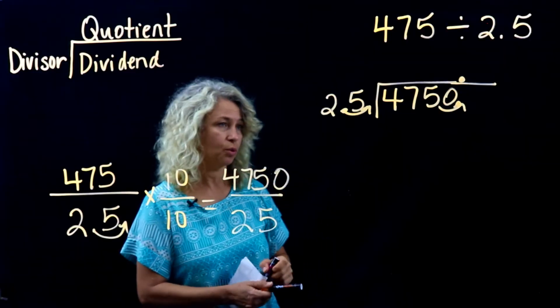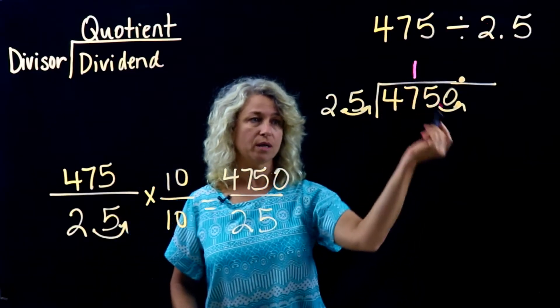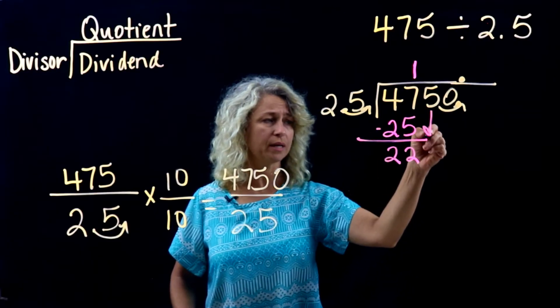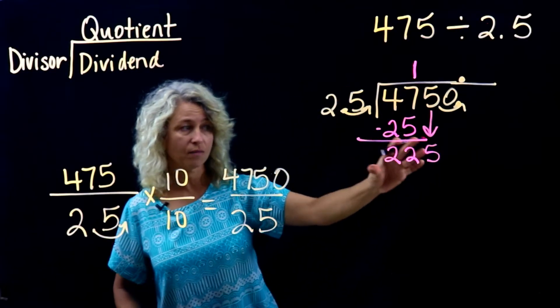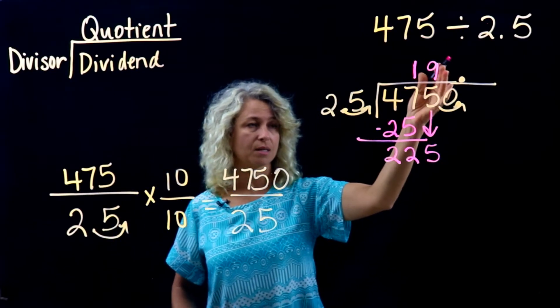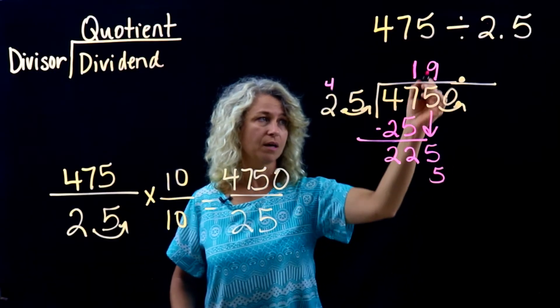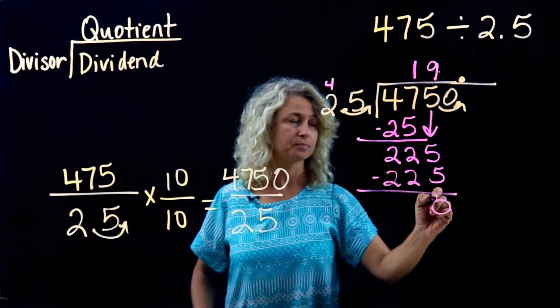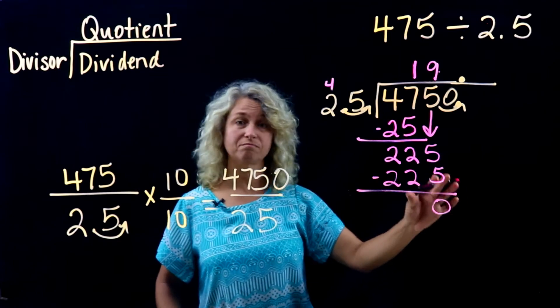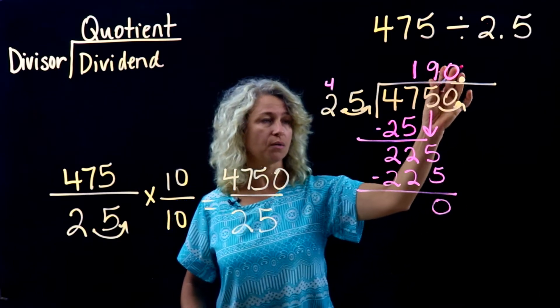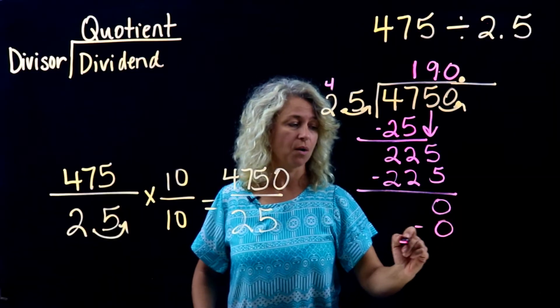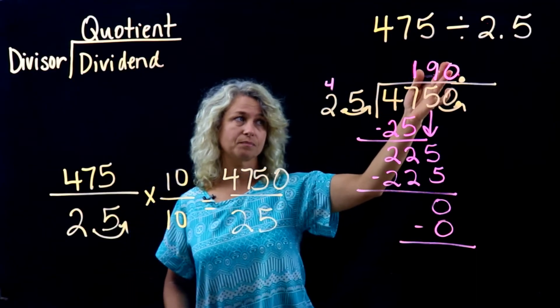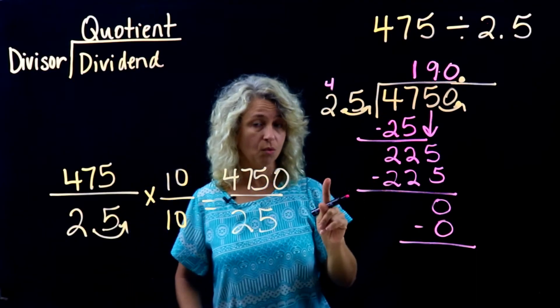Now we can just divide like usual. Twenty-five goes into forty-seven one time, one times twenty-five is twenty-five, and subtract. Bring down the five. Twenty-five goes into two twenty-five nine times. Nine times five is forty-five, nine times two is eighteen plus four is twenty-two, and subtract. Can twenty-five go into zero? No, so put a zero here. Zero times twenty-five is zero and we're finished. So our quotient is one hundred ninety.